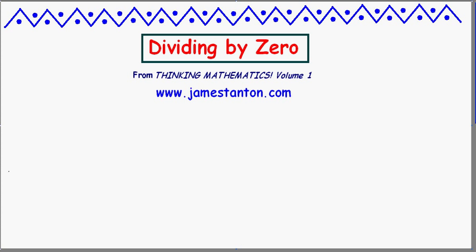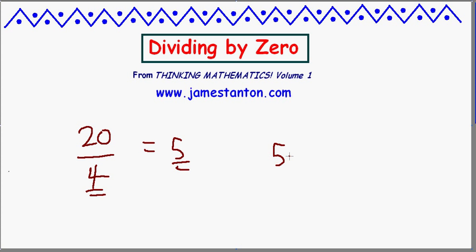Before I begin, let's just make sure we understand division. If someone told you that 20 divided by 4 is 5, you'd probably say they're right, but how would you check? Well, we'd really do the reverse. Let's look at the multiplication problem hidden behind this and ask ourselves: is 5 times 4 equal to 20? Well, yes, it is. This passes the check. We know we're right. 5 times 4 is 20, which does indeed mean 20 divided by 4 is 5.